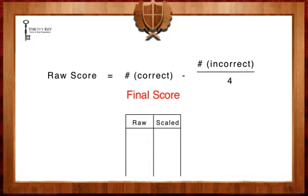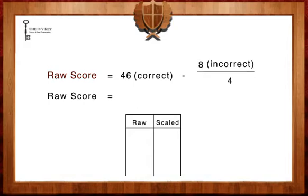For instance, if a student answered 46 questions right and eight questions wrong in the math section of the SAT, their raw score would be tabulated by writing the equation 46 minus 8 divided by 4, or 46 minus 2. And 46 minus 2 is 44. A raw score of 44 could result in a scale score of 640 points. Therefore, a student would receive a 640 on the math section of the SAT.